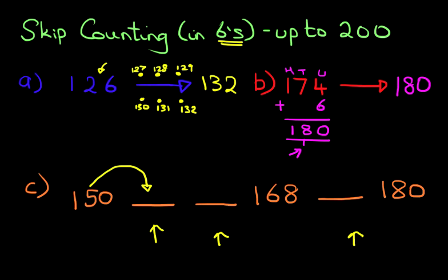Nice big arrow. So we're counting in sixes. One, two, three, four, five, six. So there are six dots. Our starting point is 150.